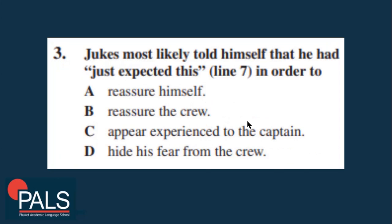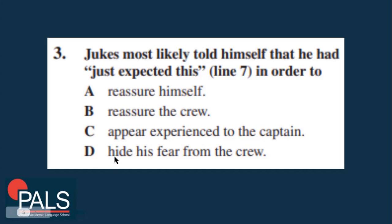Question three: Jukes most likely told himself that he had 'just expected this' in order to do what? Put yourself in Jukes's situation — like being on a stage saying 'I can do this, I did this before, I know the song.' Jukes is saying, 'I know there will be a storm,' to make himself tough and stronger — he is reassuring himself. He told himself, not the crew, so option B is wrong. There's no evidence of fear being mentioned, so 'hide his fear from the crew' is not right. The answer is he is reassuring himself.